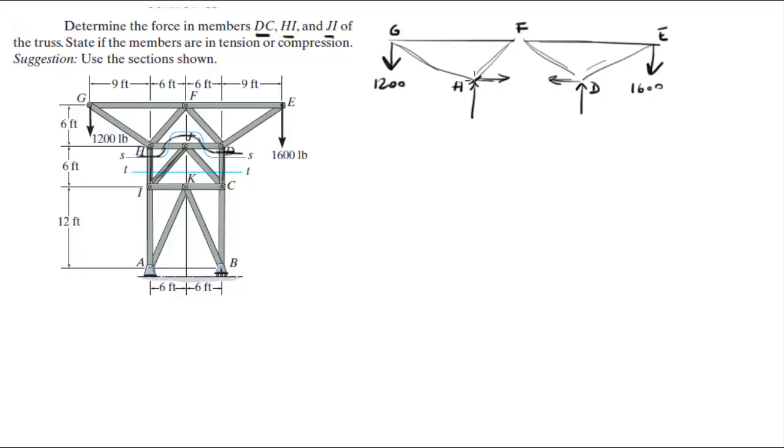Now, let's pick H. If you do the sum of the moments at H, assuming counterclockwise is positive, this is equal to zero. So you know the moment that this 1200 pound force is creating is 1200 times 9, it's going counterclockwise so it's positive, plus...